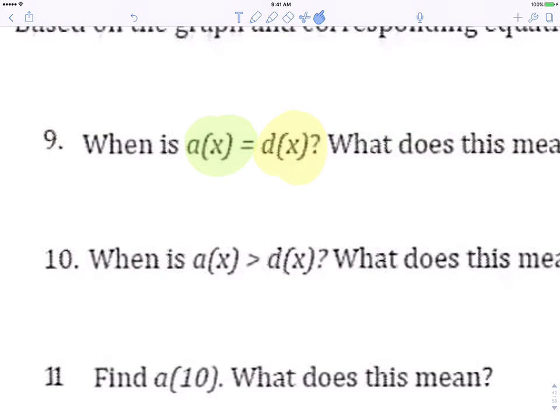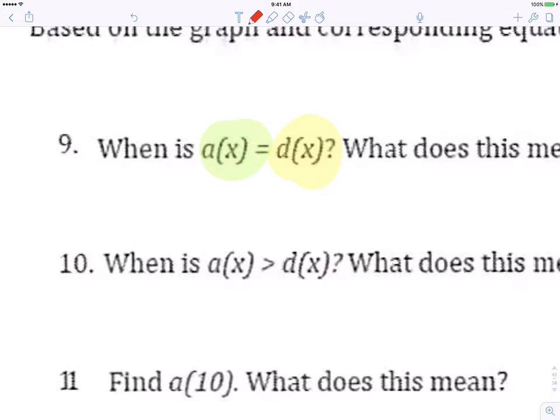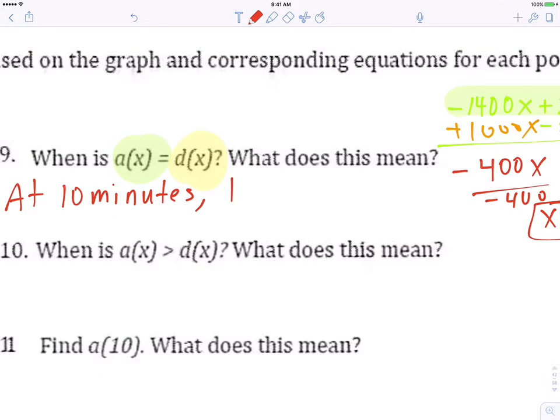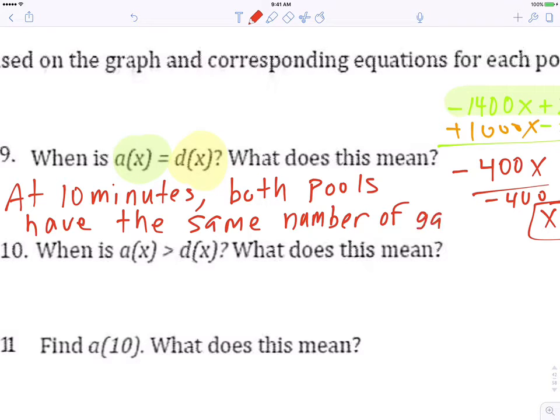So, when is a of x equal d of x? At 10 minutes. Both pools have the same number of gallons. That's what that means.